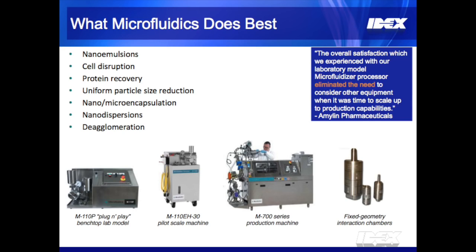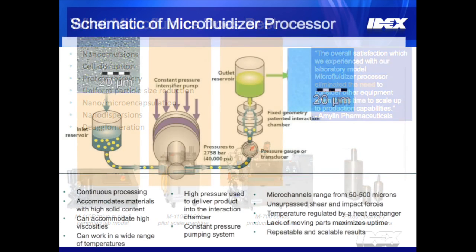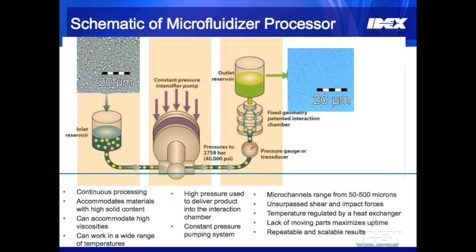At the bottom you can see a variety of Microfluidizer machines as well as the core technology, the fixed geometry interaction chamber. This is a schematic of the Microfluidizer processor. On the left side is an inlet reservoir, which allows for continuous processing of a variety of materials with high solid loading, high viscosity, and a wide range of temperatures. One of the key characteristics is the constant pressure intensifier pump, which delivers all the material at a very uniform pressure profile to the interaction chamber.